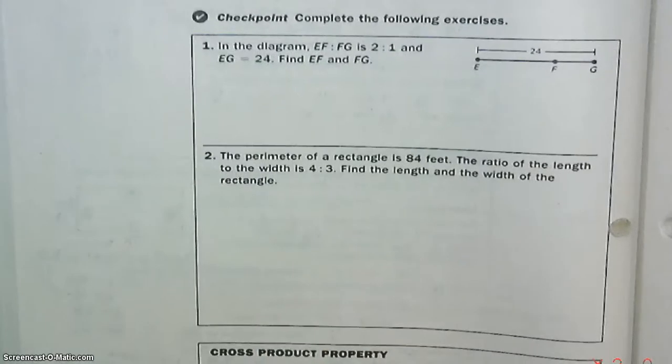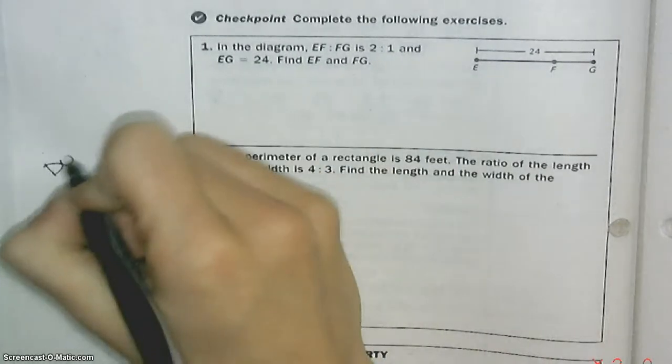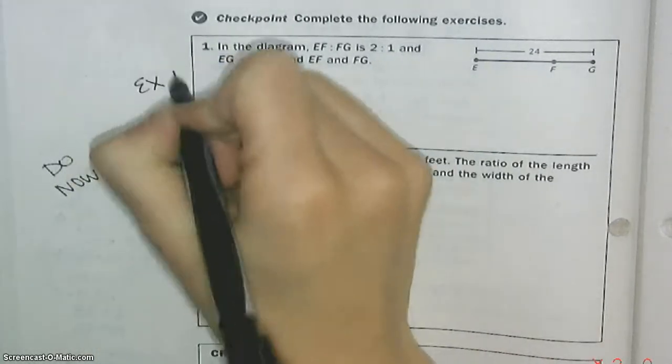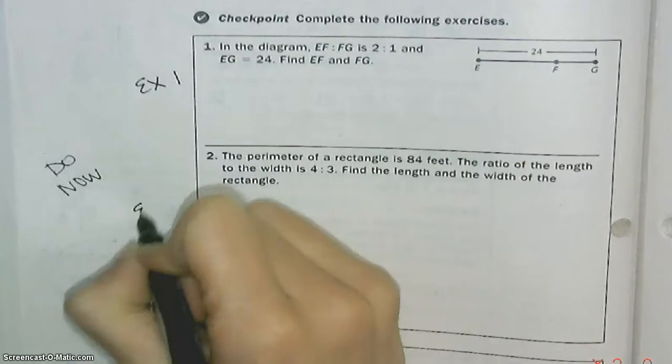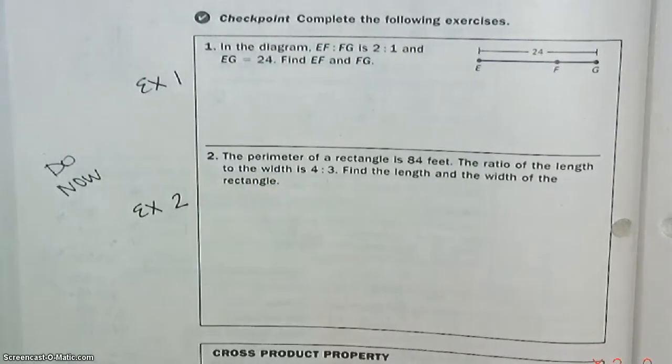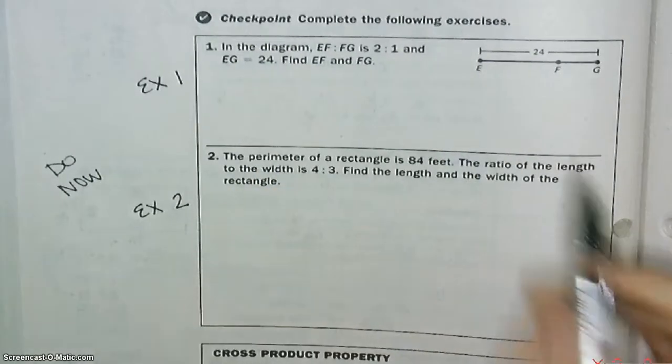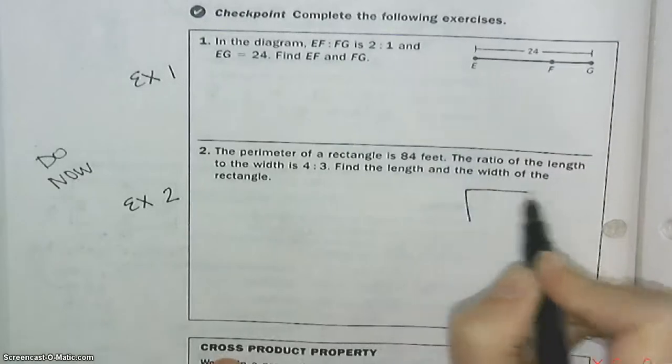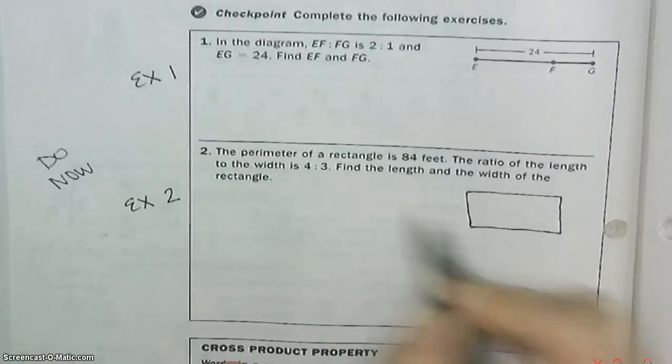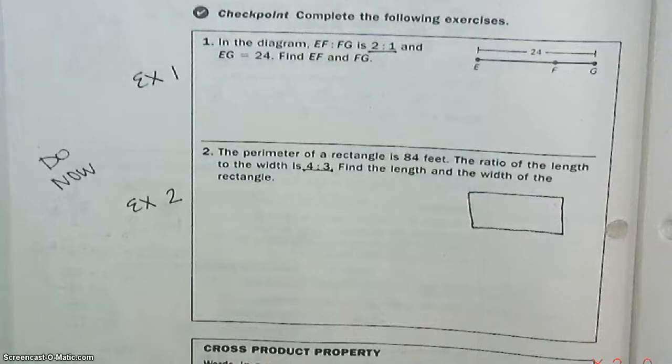You're going to do the checkpoints now. This is like example 1, and this is like example 2. We'll check those in class. Make sure you draw a picture and you label using this ratio.